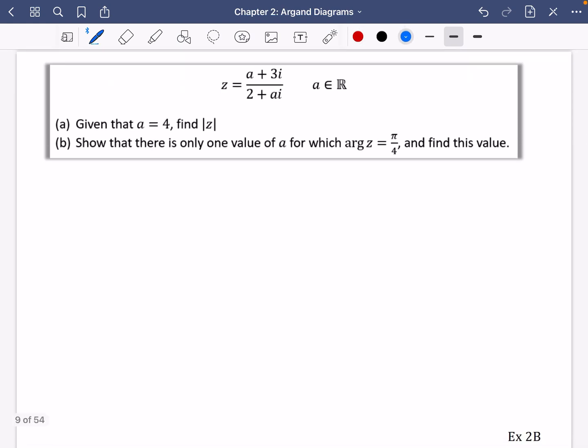So I did say we're about to do a much trickier question for exercise 2B. It tells us that z is this complex number, and you'll notice straight away that we've got some unknowns in here. We've got a in place of the numerator and in the imaginary place in the denominator. They've also told us that a is a member of the real numbers.